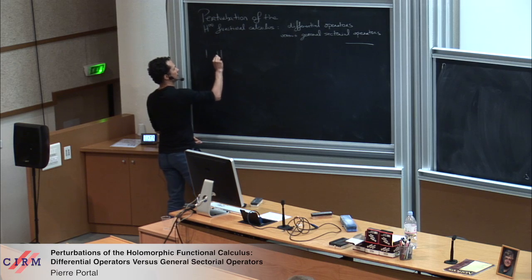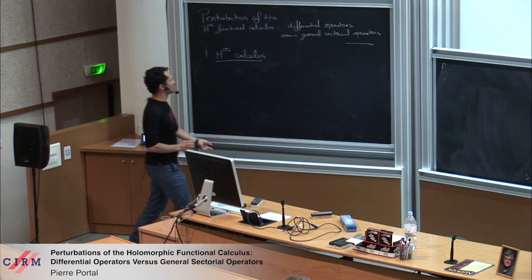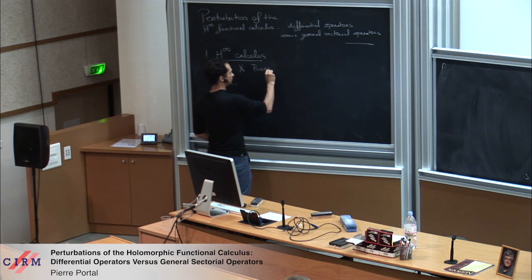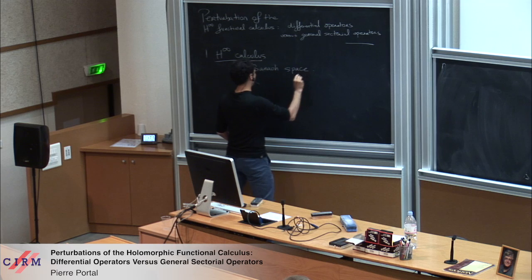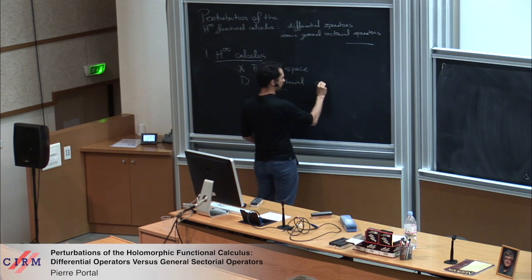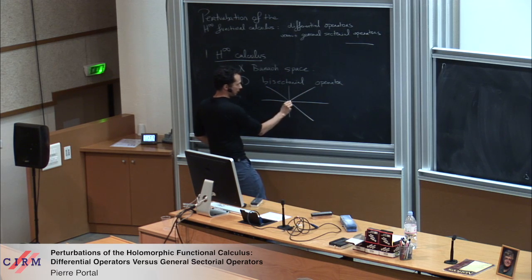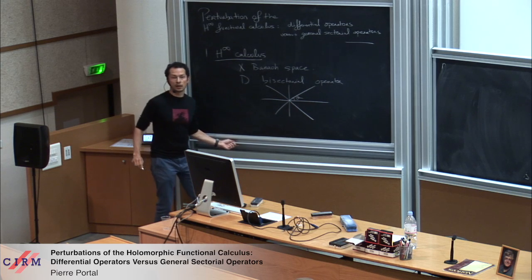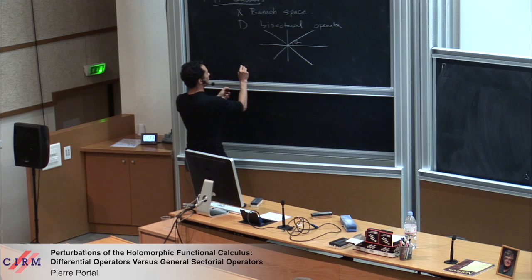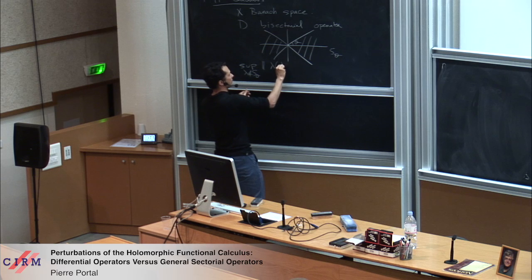Let me set the scene. I'll take a Banach space. I'm going to be dealing with bisectorial operators, which is almost the same as the sectorial case. These are operators that have their spectrum in a bisector of the complex plane, and outside of a slightly bigger bisector you have uniform bounds on the resolvents.